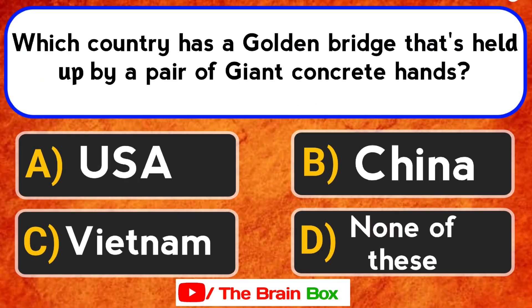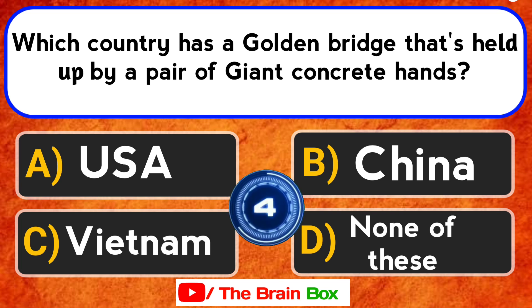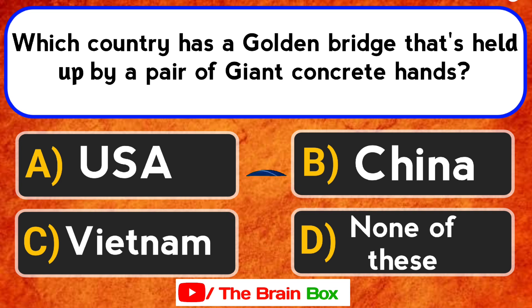Question number eight. Which country has a golden bridge that's held up by a pair of giant concrete hands? Your options are: Option A, USA. Option B, China. Option C, Vietnam. Option D, None of these. The right option is Option C, Vietnam.